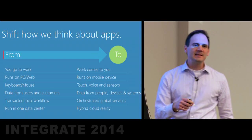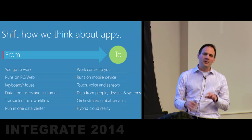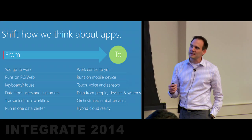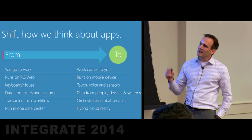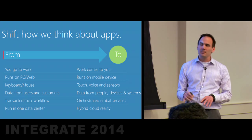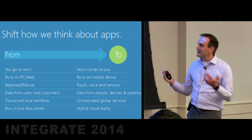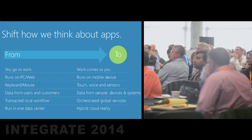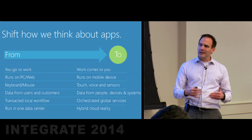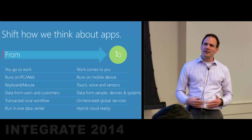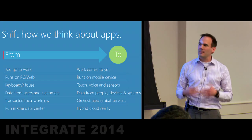We are seeing the shift from PC and web to mobile devices, and the shift from interacting with the computer through keyboard and mice to touch, voice, and other sensors. Scott talked about Internet of Things and how this massive influx of data is happening. Data used to come from users inputting it through keyboard and mice, and now it's coming not only from people but also devices and systems connected across clouds. We've got data that needs to be orchestrated across clouds — not only in your data center but across SaaS systems, public cloud, and private cloud boundaries.